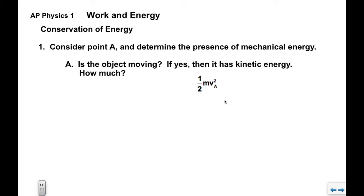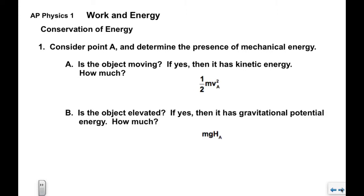We're going to differentiate this point by saying v sub a squared. So the kinetic energy at point A would be one half mv_a squared. We're then going to ask if it's elevated. We would have already established h sub zero or h naught, which would be the lowest point the object is likely to reach. That would be our zero or our vertical origin.